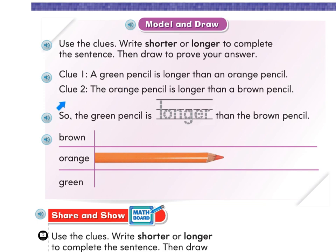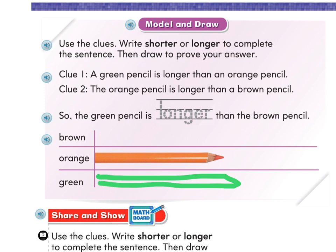They want us to put a brown pencil here, but we don't know anything about a brown pencil yet. They show us the orange pencil, and our clue just said a green pencil is longer than an orange pencil. So go ahead and draw a green pencil that is longer. Remember to start your pencil at the same spot as the object above it, otherwise it could end up looking the same length just because they're not starting at the same spot.